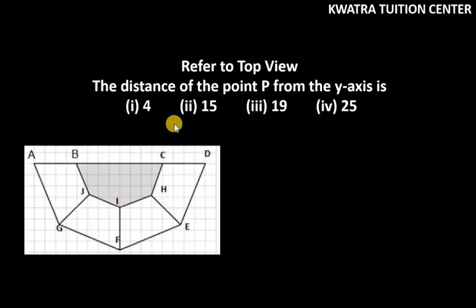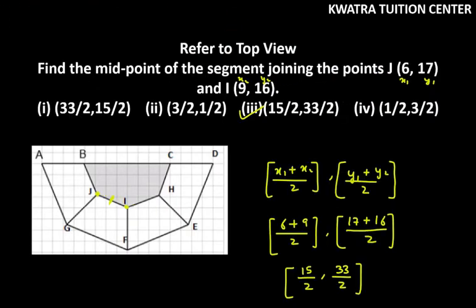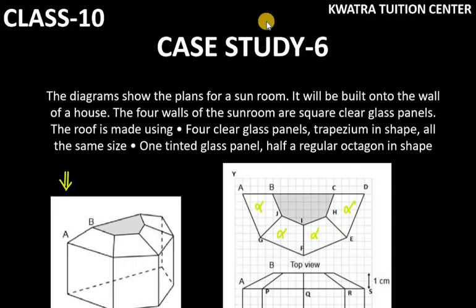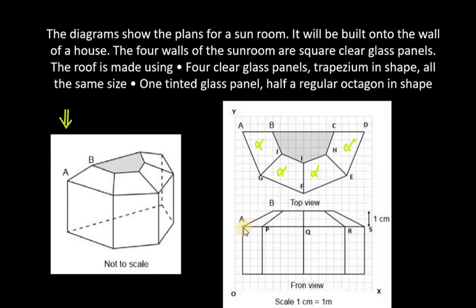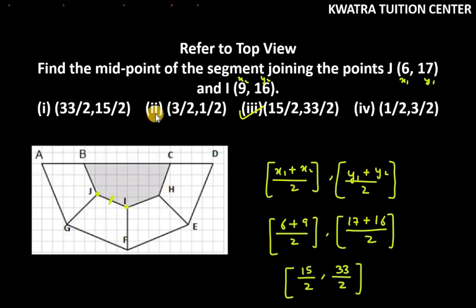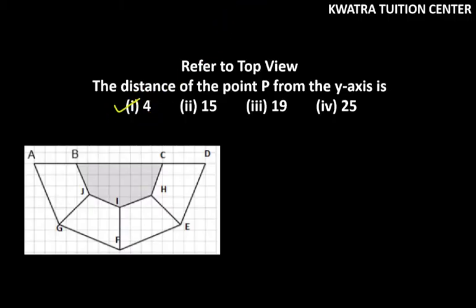Part B says: the distance of the point P from the y-axis is. We have to take the distance from the y-axis. In this figure, P is in our front view. We count: 1, 2, 3, and 4 — so it is 4 units distance from the y-axis. The answer is 4 units.